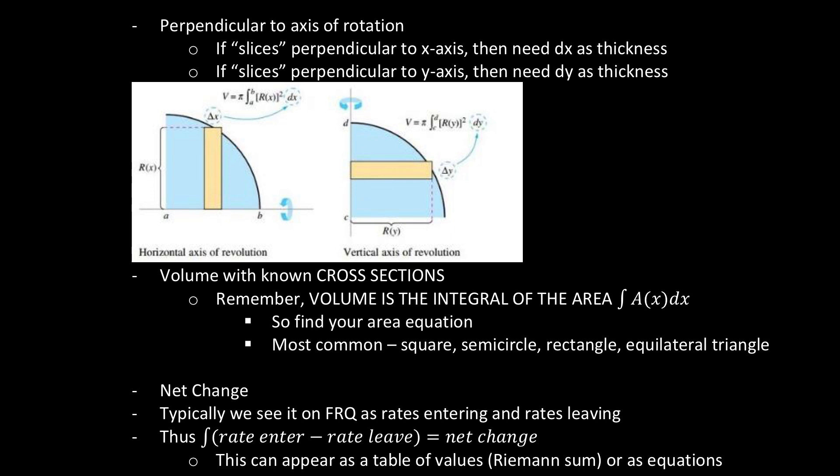If we are dealing with volumes of cross-section, with known cross-sections, remember, the volume is the integral of the area. We keep saying that. The volume is the integral of the area. Find your area equation. Whether you have a square, semicircle, rectangle, equilateral triangle, those are the most common. Find out what equation it is, use the equation for that, and get an area. Once you get that area, rotate it.